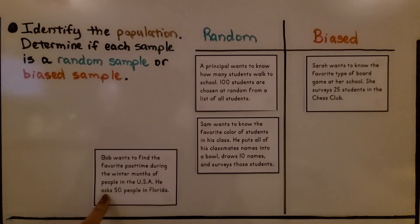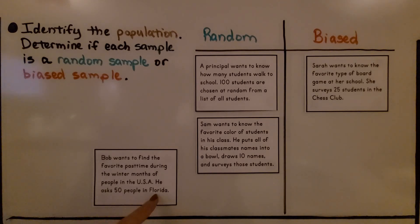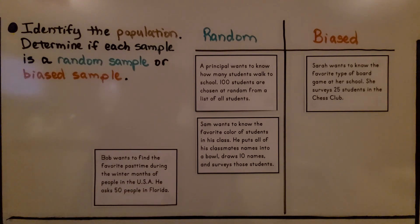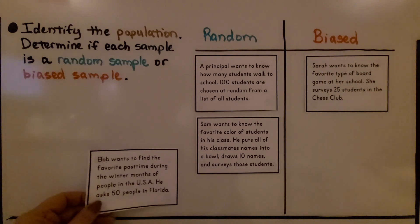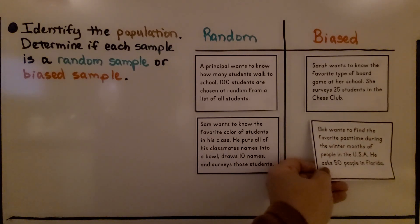This one says: Bob wants to find the favorite pastime during the winter months of people in the USA. He asked 50 people in Florida. Is that random or biased? This would be biased. He wants to know about all the people in the USA, and he only asked 50 people in one state. That's not a good representation of the entire USA, so that's biased.